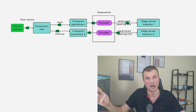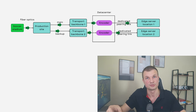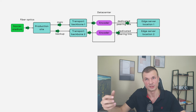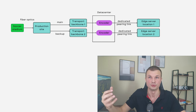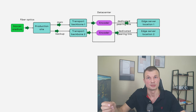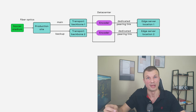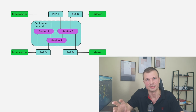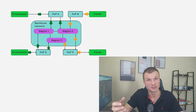Edge locations, or edge POPs (points of presence), are usually smaller data centers. There might be three or four core data centers on a continent, and then ten, twenty, or even a hundred edge POPs responsible for edge computing and storage closer to end users. Once data is encoded it gets sent to edge server locations via dedicated peering links or a transfer backbone between core and edge data centers.